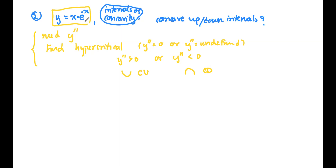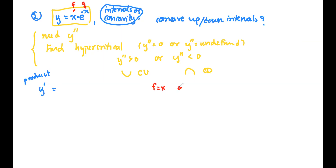We have y as the product of x and e to the negative x. We're going to start by finding y prime and y double prime. We'll use the product rule. So on the side: f is x, g is e to the negative x, f prime is one. What is g prime?